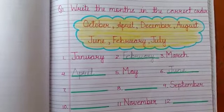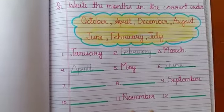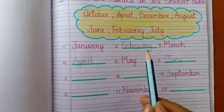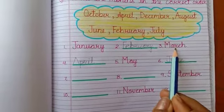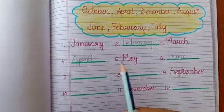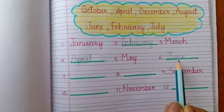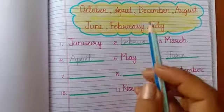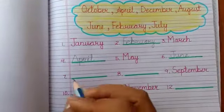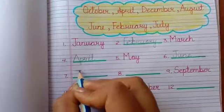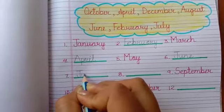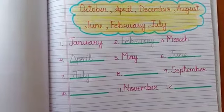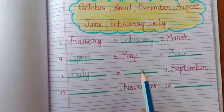Very good! Now let's recall: January, February, March, April, May, June, then July. Yes, this one is July. So you have to write July here — J-U-L-Y. Now what comes after July?